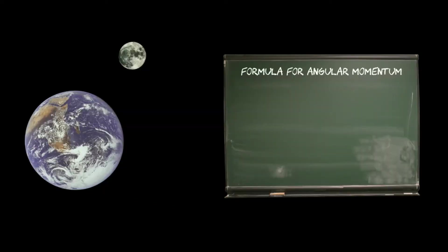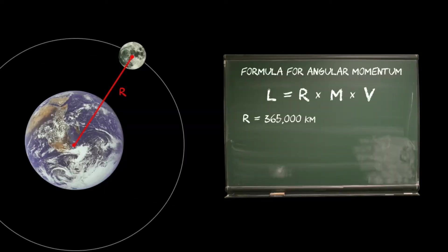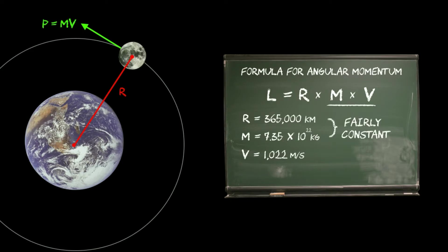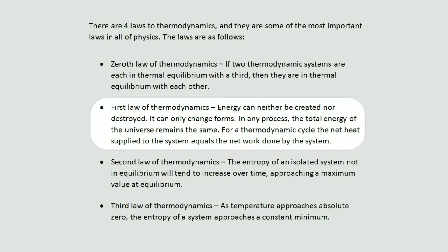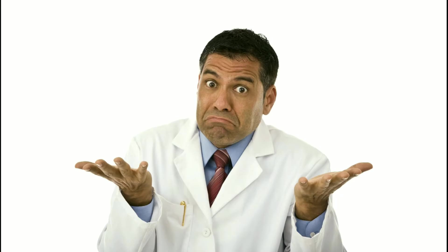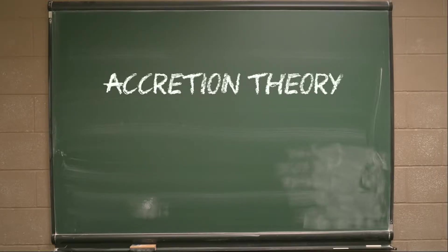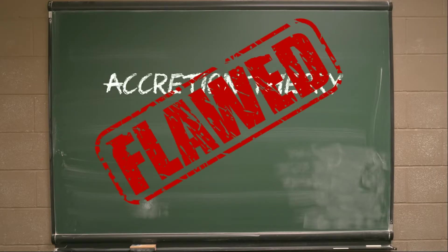Angular momentum is calculated by the product of orbital radius and the linear momentum of the object, where momentum is mass times velocity. Since the Moon's current mass and orbit cannot be changed, that leaves the velocity of the Moon as the dodgy variable in this overabundance of angular momentum. Since energy can neither be created nor destroyed — just passed from one form to another — the extra kinetic energy required for the Moon's speedy orbit would have to come from somewhere outside the accretion disk. We can't really account for this, so it remains a very big flaw in the accretion theory.